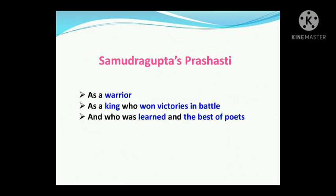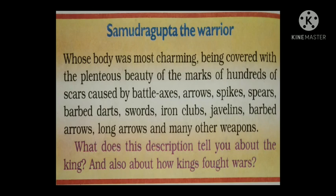In Samudragupta's Prashasti, the poet praised the king a lot — as a warrior, as a king who won victories in battle, and at the same time as learned and the best of poets. You can see one of the Prashastis related to Samudragupta here. The poet described Samudragupta as equal to the gods, and this Prashasti was composed in very long sentences. In the Prashasti, Harishena describes four different kinds of rulers.